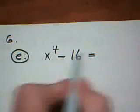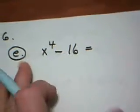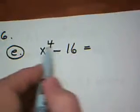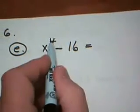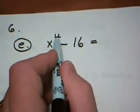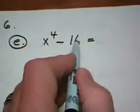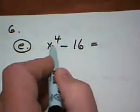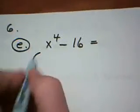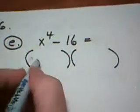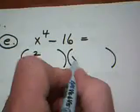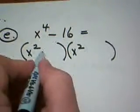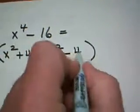All right, question number 6, part e, asks us to factor the expression x to the 4th minus 16. Notice that both of these are perfect squares. Whenever an exponent is an even power, it's a perfect square. And of course, 16 is a perfect square because it's 4 times 4. Minus makes it the difference of two perfect squares. So this is going to start off by factoring as x squared. We're going to have a plus 4 and we're going to have a minus 4.